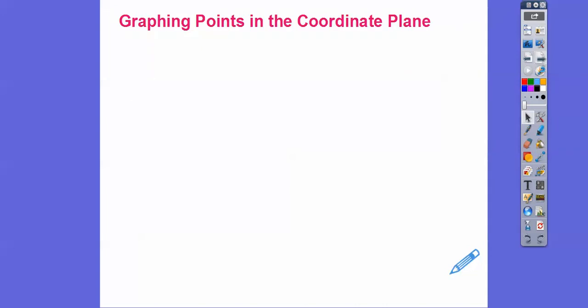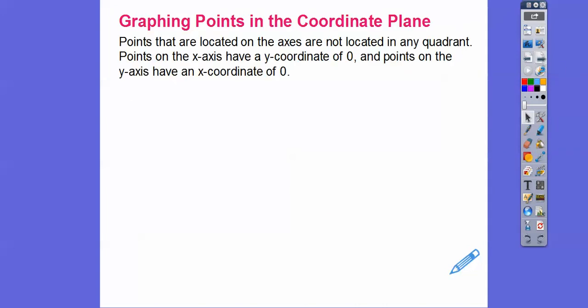Points that are located on the axes are not in any quadrant at all — they're just on one of the axes. Points that are on the X-axis have a Y-coordinate of zero, and points that are on the Y-axis have an X-coordinate of zero.